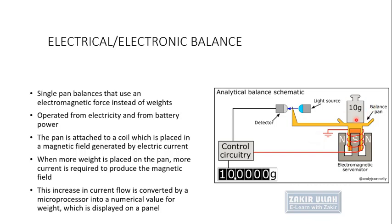This is the schematic diagram of the electrical balance. The weight is placed on the pan and below there is an electromagnetic field. When more weight is placed, more electromagnetic field is created. This strikes a detector area which is connected with the circuit. When any weight is placed on the pan, the electromagnetic field is created and converted into units and a numerical value, which is displayed on the balance's display.